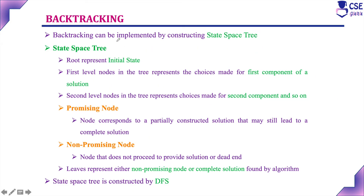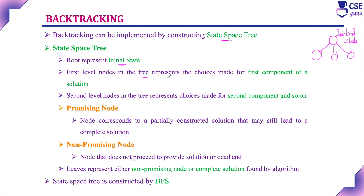Backtracking can be implemented by constructing the state space tree. In a state space tree, the root represents the initial state. The state space tree starts with this initial state, then considers the first level components. The first level in the tree represents the choices made for the first component of a solution. Next, consider the second level component, and so on.